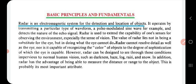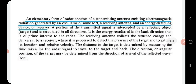Radar consists of a transmitting antenna emitting electromagnetic radiation generated by an oscillator, a receiving antenna, and an energy-detecting device or receiver. A portion of the transmitted signal is intercepted by a reflecting object (target) and is reradiated in all directions. The energy reradiated in the back direction is of prime importance — the receiving antenna collects the return energy and delivers it to the receiver, where it is processed to detect the target and extract its location and relative velocity.